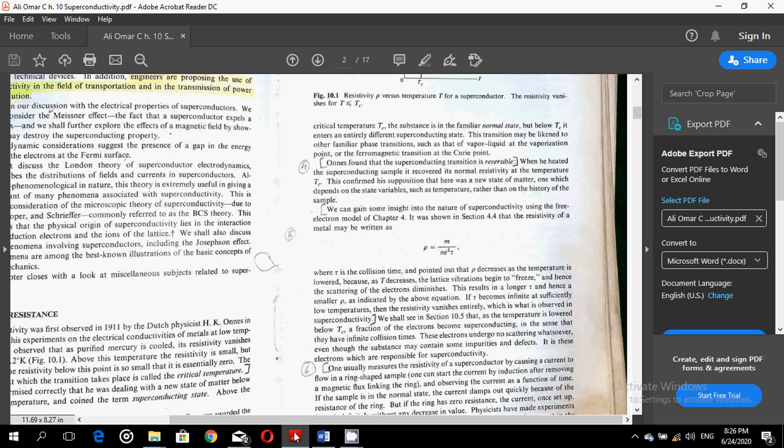This confirmed his supposition that there was a new state of matter, one which depends on the state variables such as temperature rather than on the history of the sample. We can gain some insight into the nature of superconductivity using the free-electron model of chapter 4. It was shown in section 4.4 that the resistivity of a metal may be written as this equation.